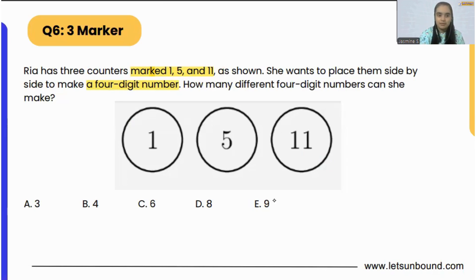We have three counters: 1, 5, and 11. So there will be three spaces. Let's make some space to write down our numbers.